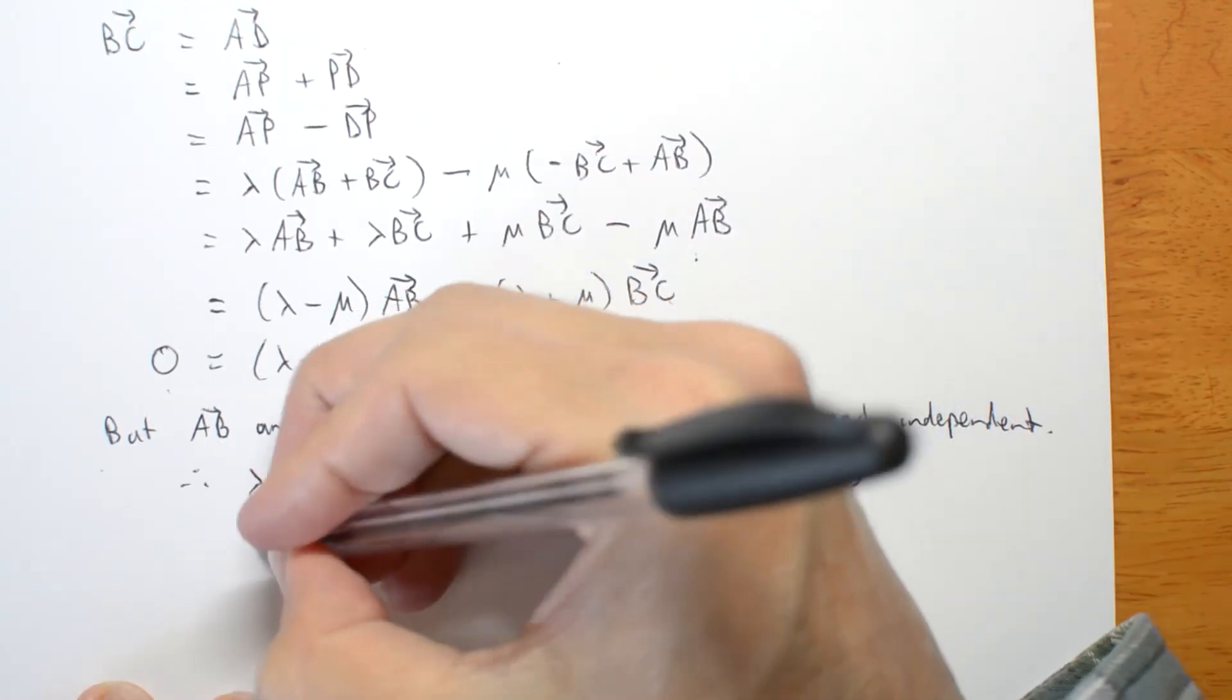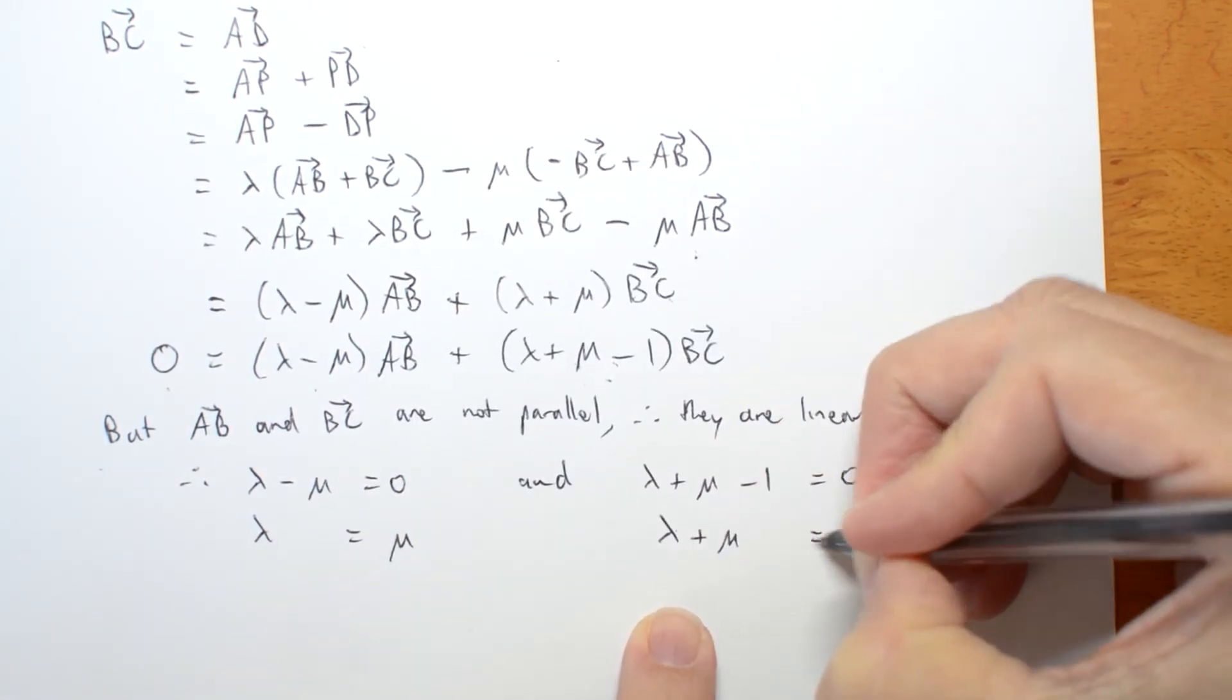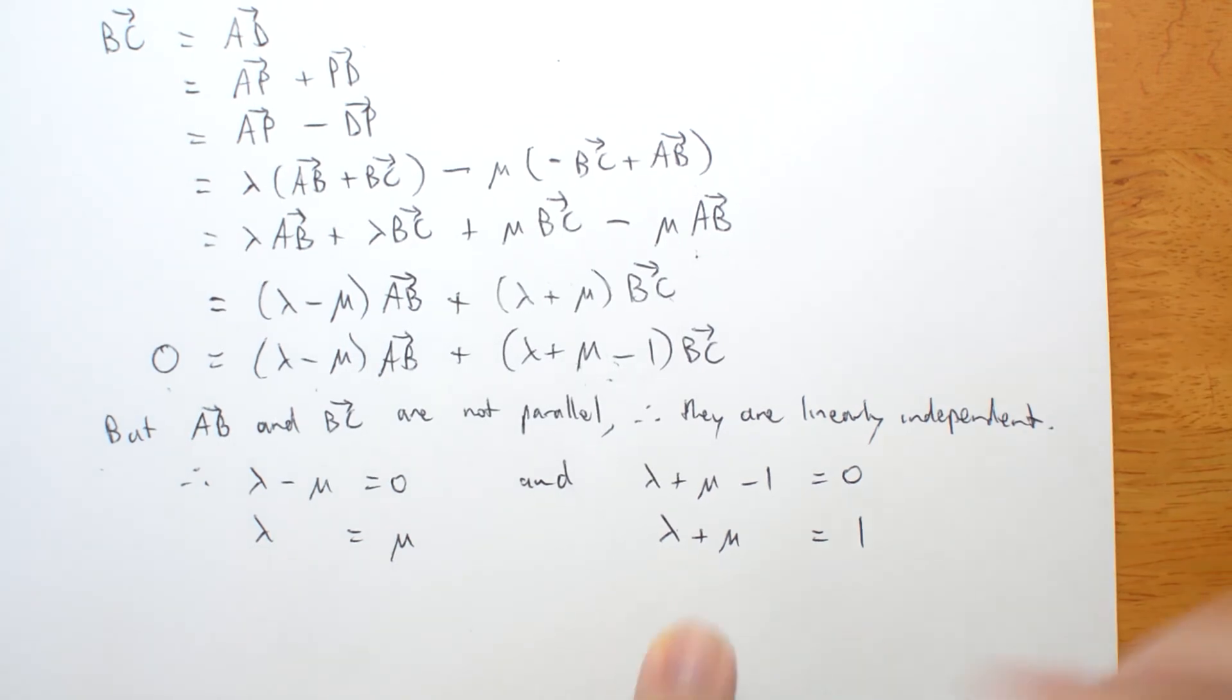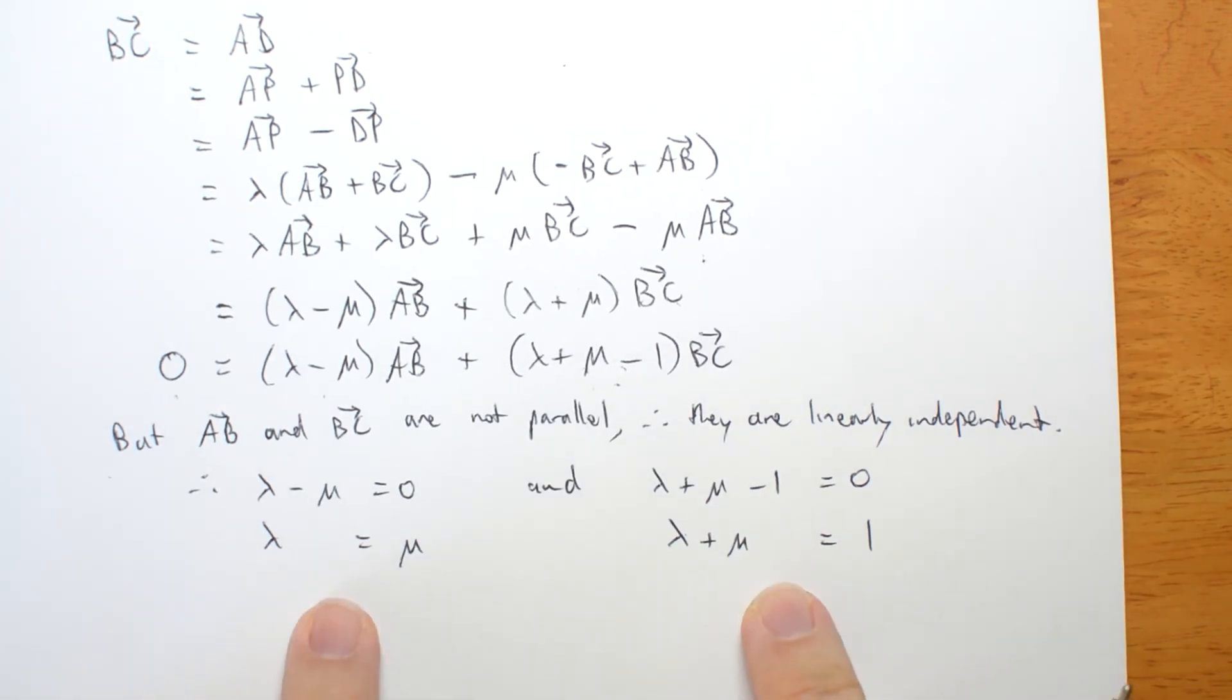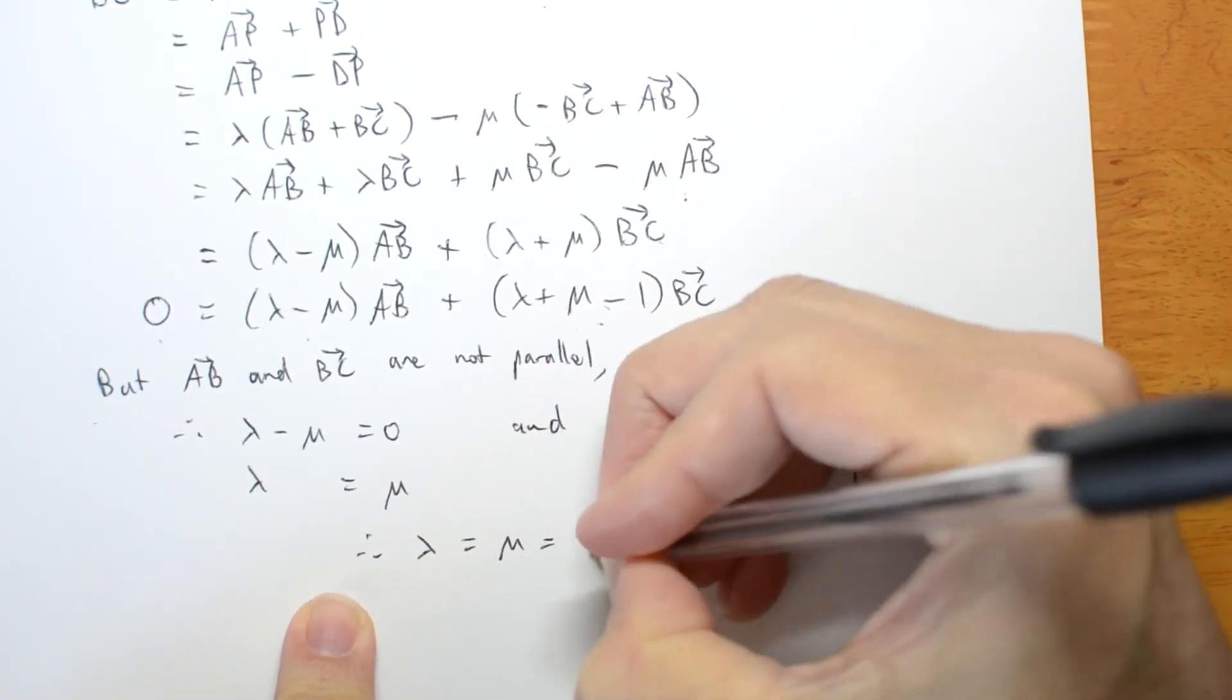Well, that means lambda is the same as mu. And if I add them together, I get one. And the only way I can have this is if they're both a half. Therefore, lambda equals mu equals a half.